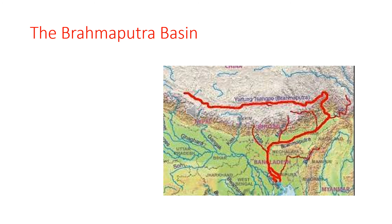The Brahmaputra enters India through Arunachal Pradesh and flows through Assam before entering Bangladesh. That's all for the Brahmaputra Basin. That's all for today's class. I hope you all understood — we will meet in the next class. Thank you, have a nice day.